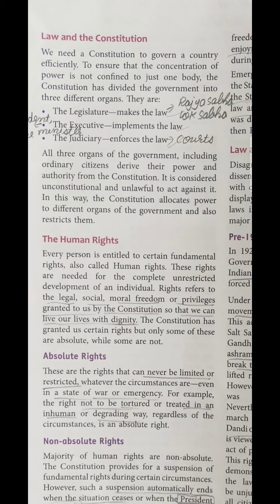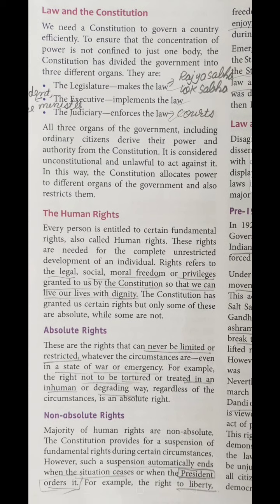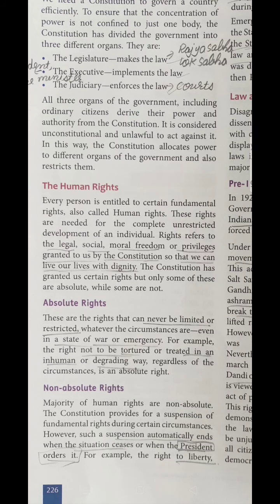Now we are going to discuss various human rights. Each and every human right gives some fundamental rights which ensure the protection of humans, so that a person is not discriminated against in society because of caste, color or creed. Rights refer to the legal, social, and moral freedoms or privileges granted by the constitution so that we can live our life with dignity.